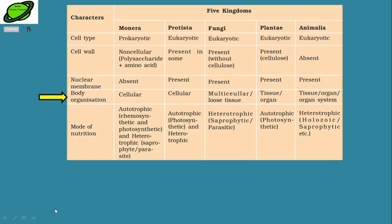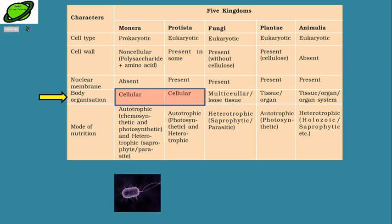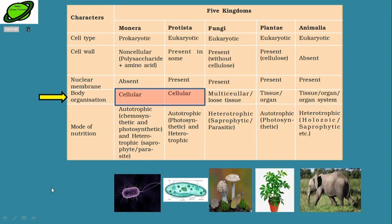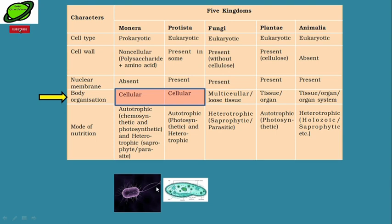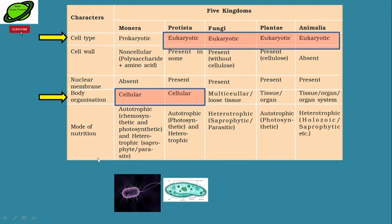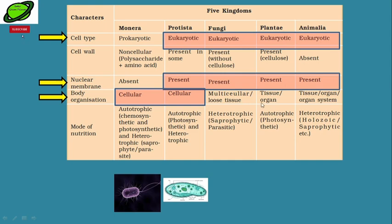The first point of classification is body organization — whether the organism is unicellular or multicellular. Unicellular organisms are found in either Kingdom Monera or Kingdom Protista, whereas the other kingdoms have multicellular organization. To differentiate between Monera and Protista: Monera are prokaryotic with no nuclear membrane, while Protista are unicellular eukaryotes with a nuclear membrane.